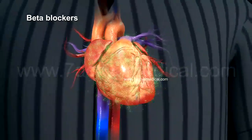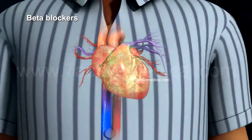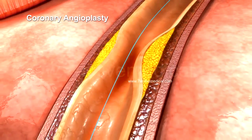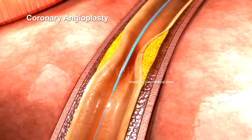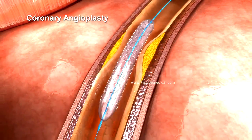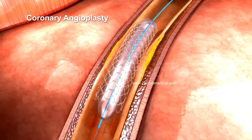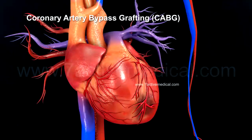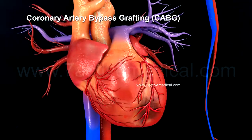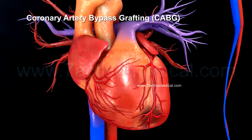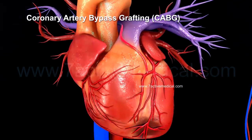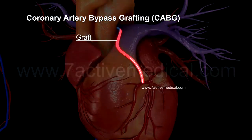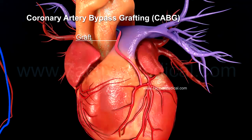5. Beta blockers, which reduce the heart rate thereby decreasing the oxygen requirement. 6. Coronary angioplasty, an interventional procedure in which a balloon-tipped catheter is inflated inside a blocked coronary artery to open it, with a stent remaining behind to keep the coronary artery patent. 7. Coronary artery bypass grafting, or CABG, a surgical procedure in which the blocked coronary artery is bypassed with a vein or artificial graft material in order to re-establish blood flow to the heart.